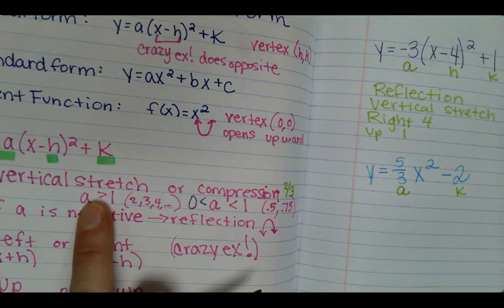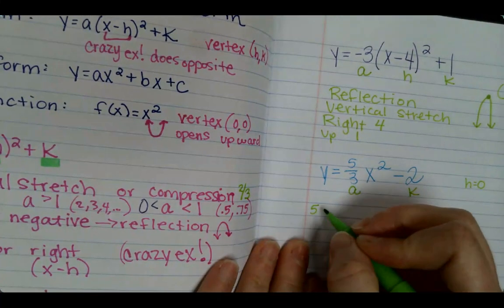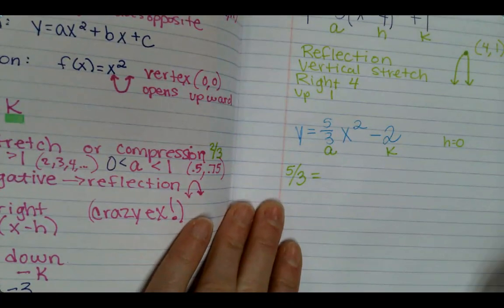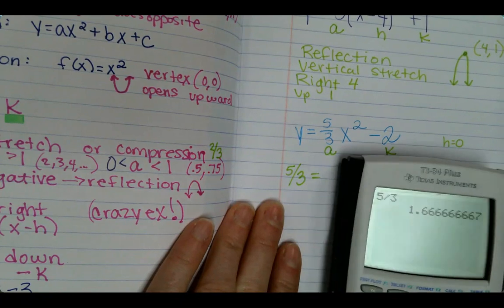So that means it's going to be a stretch because it's greater. So we can go vertical stretch. And it doesn't go left or right because there's nothing inside the parentheses, but this minus 2 is our k. K tells us up or down, so if it's minus 2 it means it's going to go down 2.